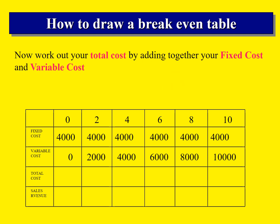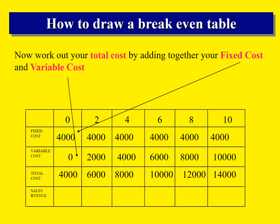Next, we're going to work out our total costs. We're going to do this by adding together the fixed cost and the variable cost. So when we make none, our fixed cost is £4,000 and our variable cost is nothing, so our total cost is £4,000. If I make two crates, my fixed cost is £4,000, my variable cost is £2,000, and you can see the others filling in — so £4,000 plus £4,000 is £8,000, etc.